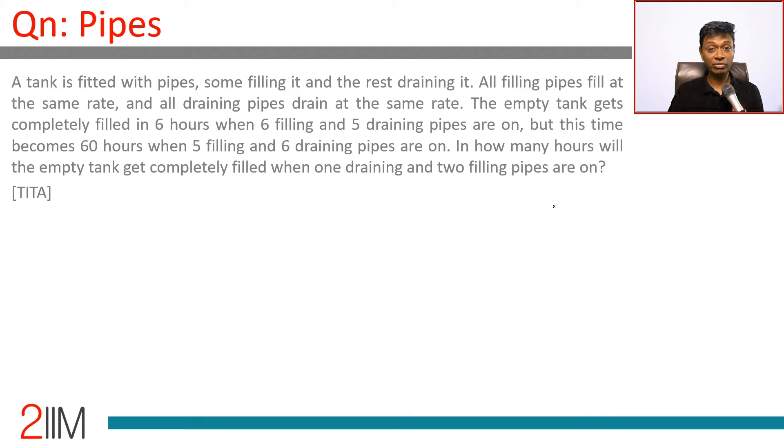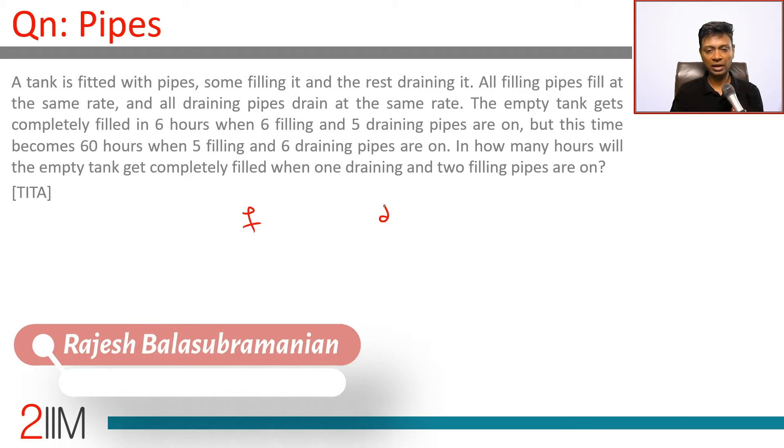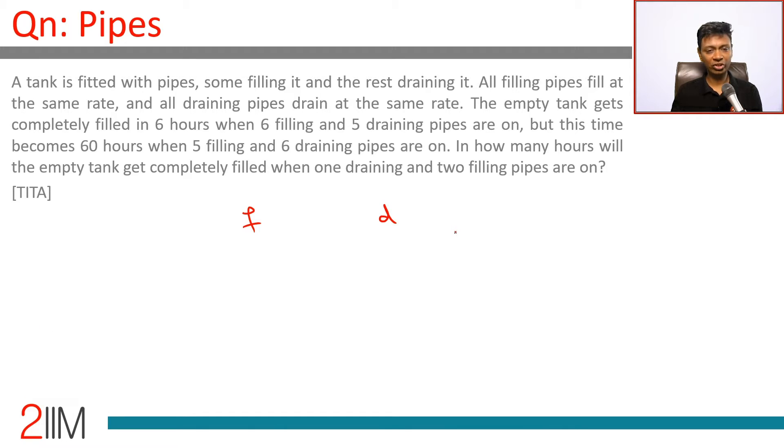A tank is fitted with pipes, some filling it and the rest draining it. All filling pipes fill at the same rate, all draining pipes drain at the same rate. The empty tank gets filled in 6 hours when 6 filling and 5 draining pipes are on.